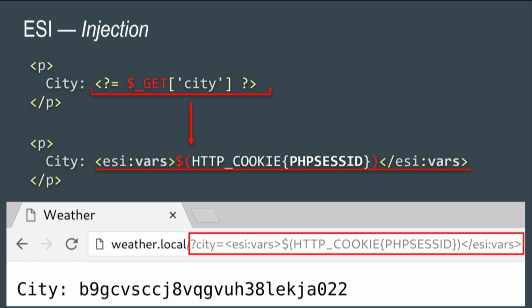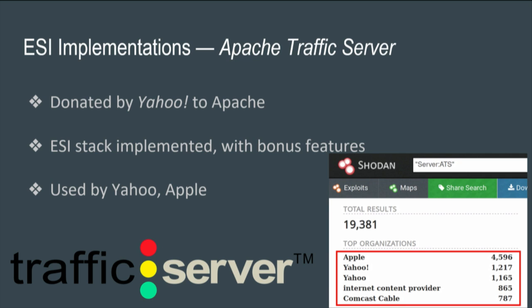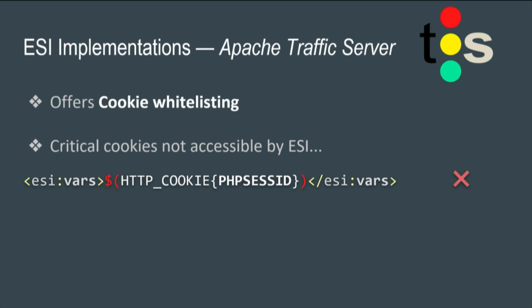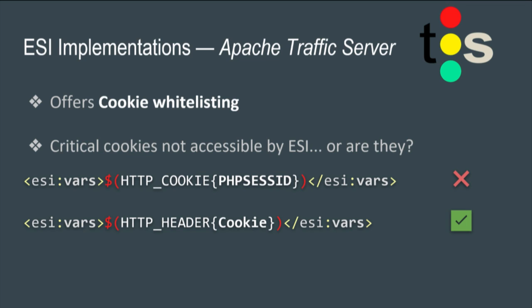Let's build a payload and look at Apache Traffic Server. It's used by high-profile organizations — Shodan tells us Apple, Yahoo, and Comcast use it. It has the initial ESI stack plus bonus security features. One is cookie whitelisting: even if you inject ESI tags, you can't access cookies unless they're whitelisted. But reading the documentation reveals another ESI variable called HTTP header that lets you refer to any header — including cookies — bypassing the whitelist completely. That was fixed when reported two months ago.